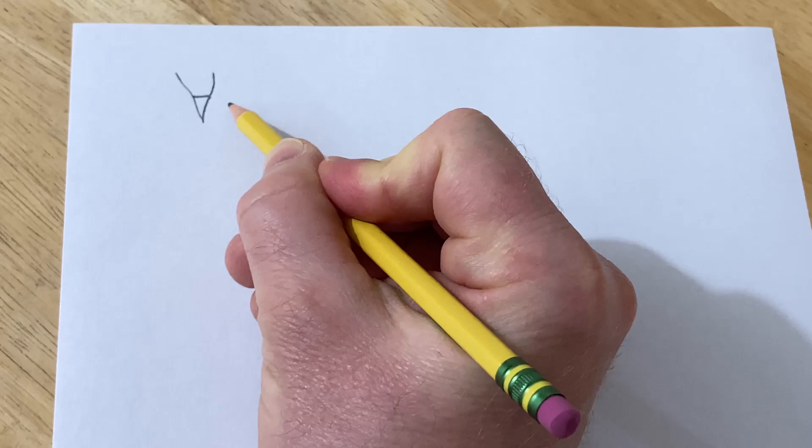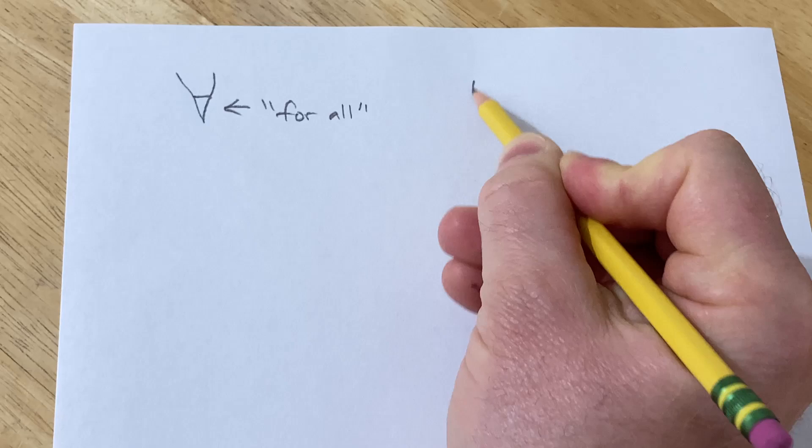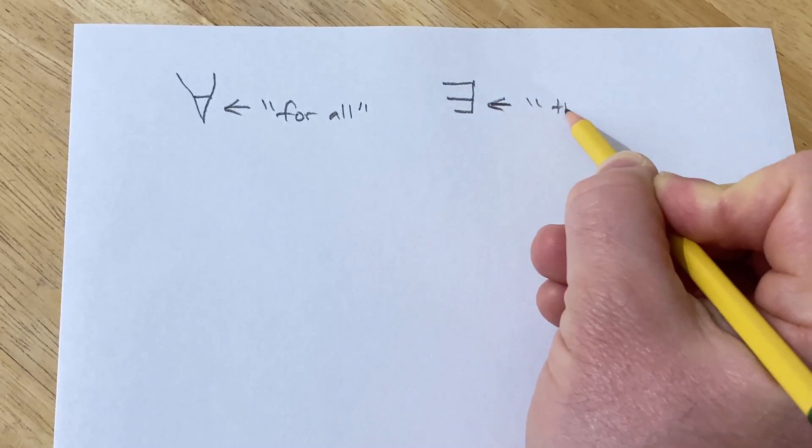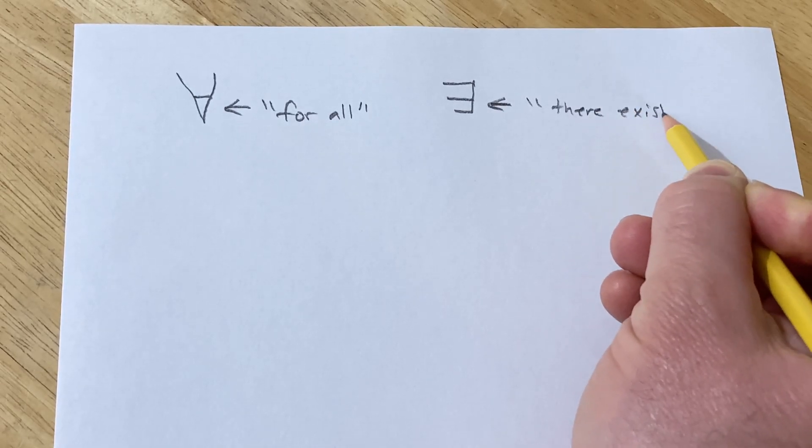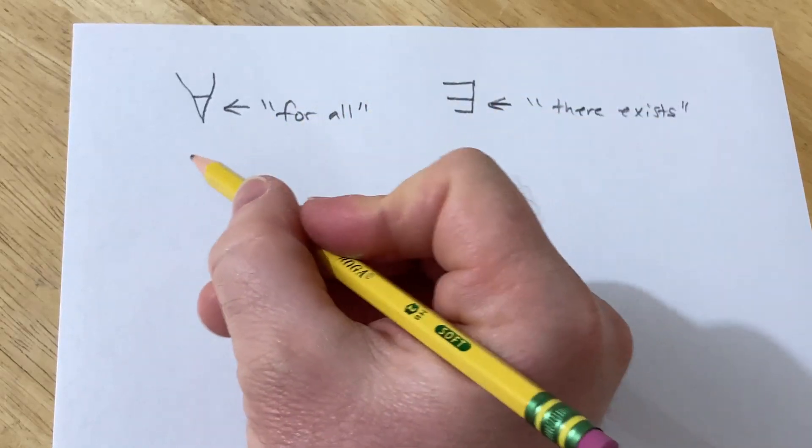So this upside down A, this symbol means for all. And this backwards E, this symbol means there exists. These are examples of things we call quantifiers in mathematics.